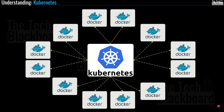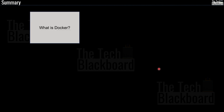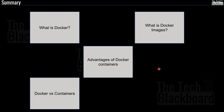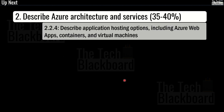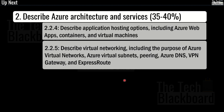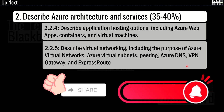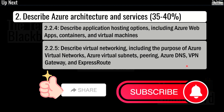Let's quickly summarize what we learned in this part. We learned what Docker is, what Docker images are, advantages of Docker containers, Docker versus containers, and we touched upon Kubernetes — marking the completion of section 2.2.4. In the next video, we will start with section 2.2.5 — Describe Virtual Networking, including the purpose of Azure Virtual Networks, Azure Virtual Subnets, Peering, Azure DNS, VPN Gateway, and ExpressRoute. I hope you learned something new today. Please like and share our videos and subscribe to the channel. Stay fit, keep learning, and thanks for watching.